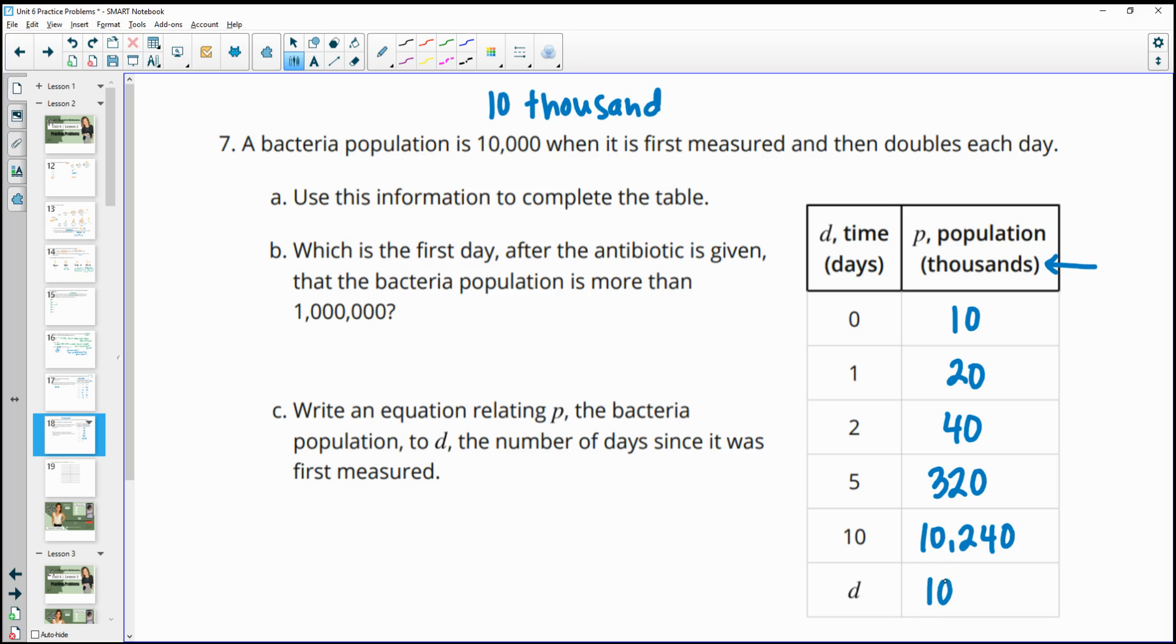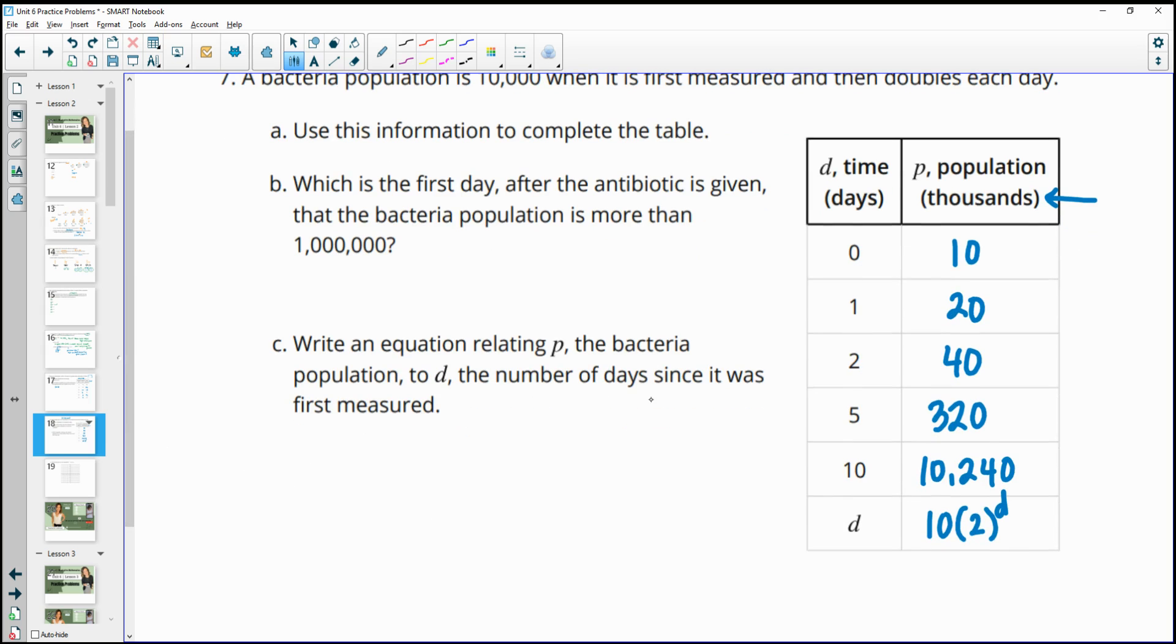So if it's D, then we double this however many times D is. So D is going to be the exponent. So we would get 2 to whatever power times 10 for whatever D is. And that's also the way we would write our equation. So this one's relating P. So let's do P equals 10,000, just 10 in this case, times the growth factor, which is 2. It's doubling. And then D being the number of days. And that will be your exponent.